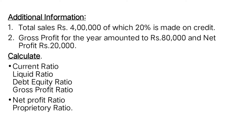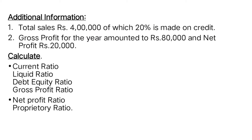Additional information: total sales are rupees four lakh, of which twenty percent is made on credit. Total sale equals cash sales plus credit sales. Since we need only net sales, we take the full four lakh figure — we don't need to separate the twenty percent credit portion.